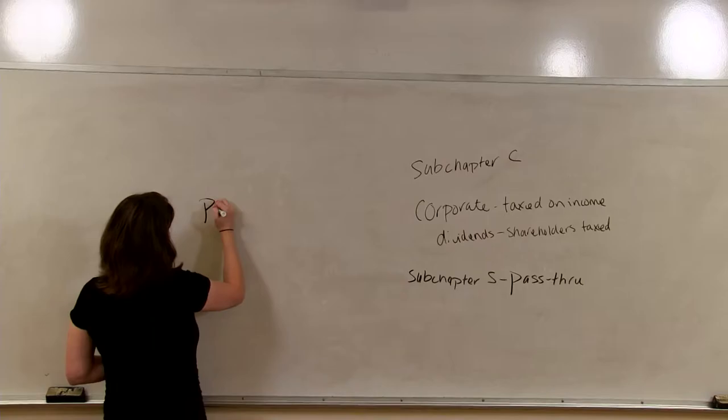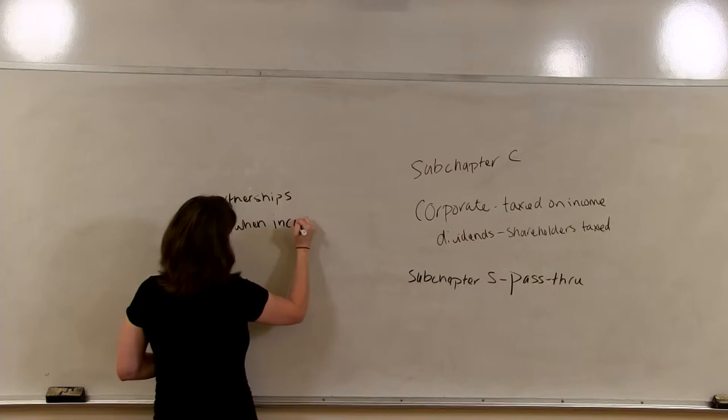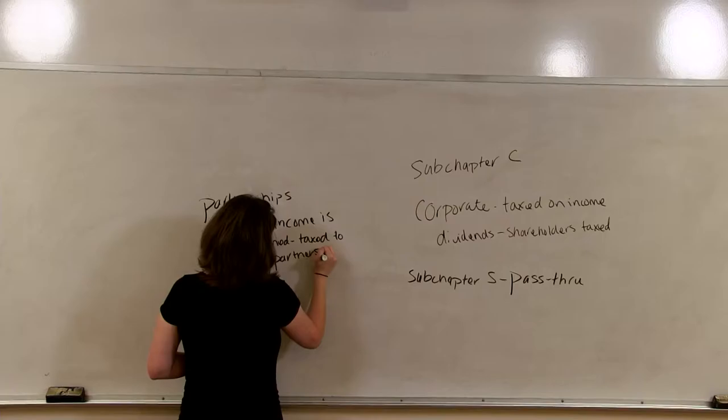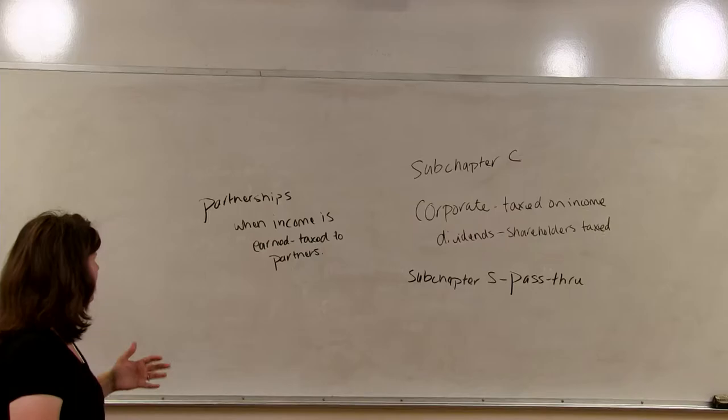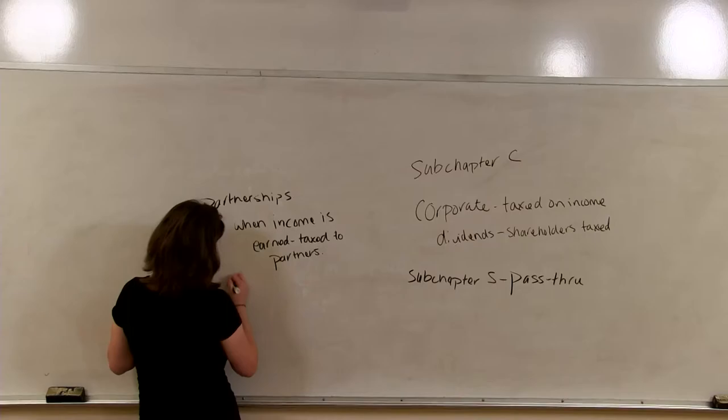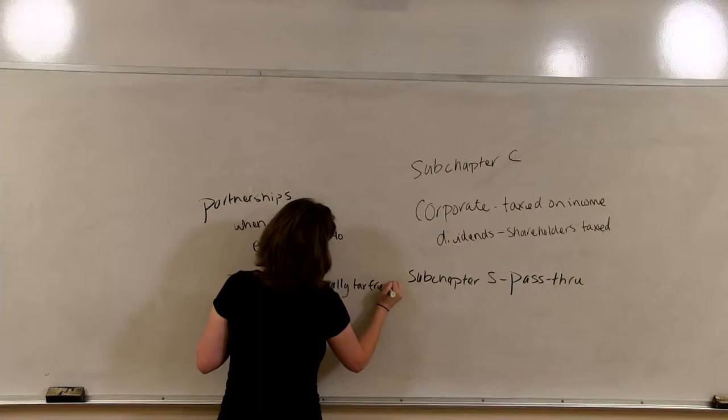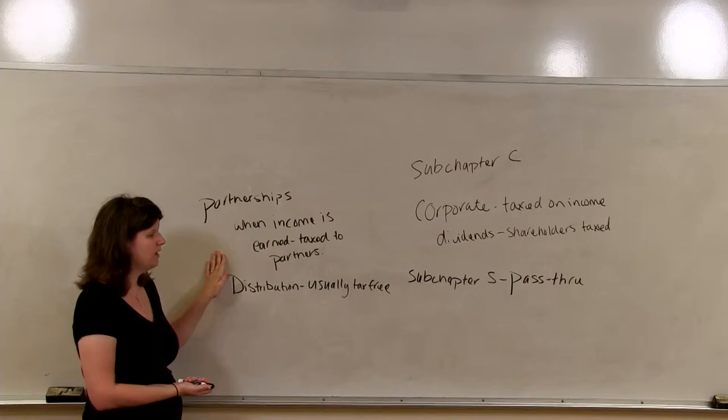So, with partnerships, we only have one level of tax, and that's when the income is earned. When income is earned, it is taxed to the partners. What about when the partners later receive a dividend or distribution? We call it a distribution in the partnership world. That is generally tax-free. So, the distribution, which occurs later, is usually tax-free. Almost always.